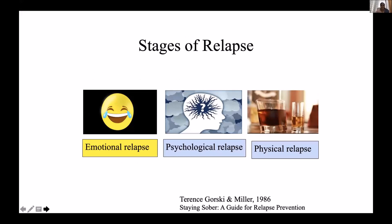There are stages of relapse — emotional relapse, psychological relapse, and physical relapse — as described by Gorsky and Miller in 1986 in the book 'Staying Sober: A Guide to Relapse Prevention.' In the first stage, emotional relapse, the individual bottles up emotions, is unable to express them, has unhealthy emotions, and cannot follow certain routines or manage themselves normally after abstinence.